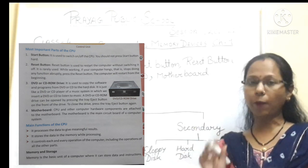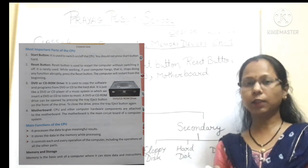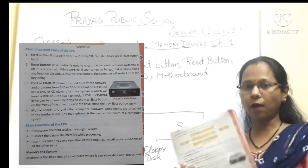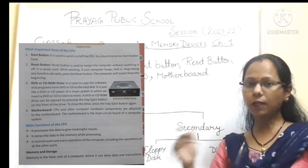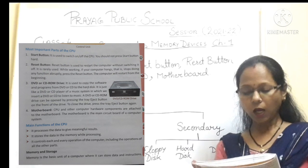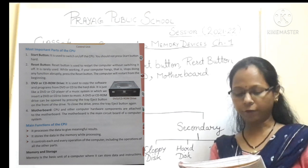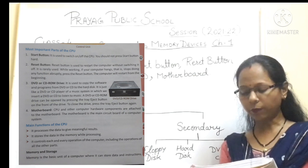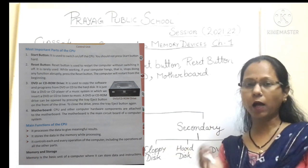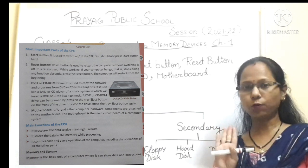जो CPU का cabinet होता है उसमें DVD/CD drive की जगह बनी होती है. पहले floppy drive की भी जगह बनी होती थी, अब floppy नहीं चलती तो अब सिर्फ DVD और CD की ही place बनी होती है. A DVD and CD ROM drive can be opened by pressing the tray eject button on the front of the drive. To close the drive, press the tray eject button again. जब आप eject button दबाएंगे तो tray बाहर आ जाती है, उसमें CD या DVD रखनी है और फिर button press करना है.